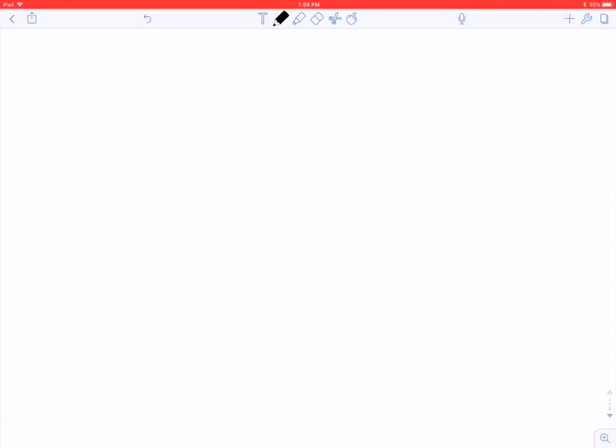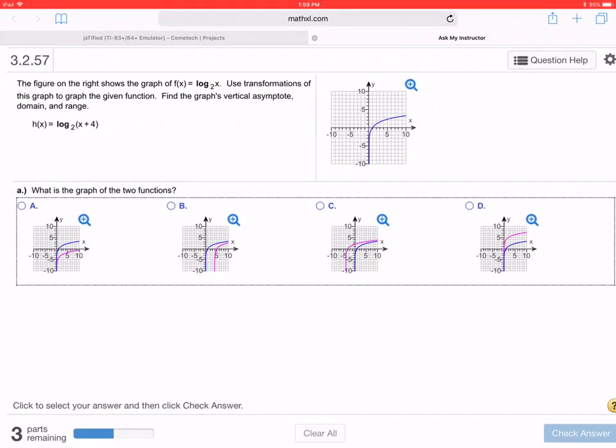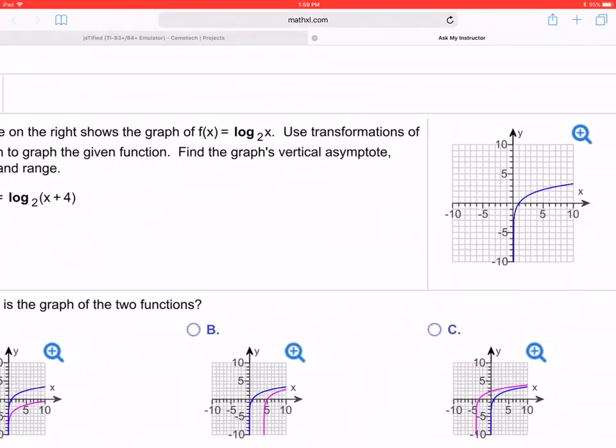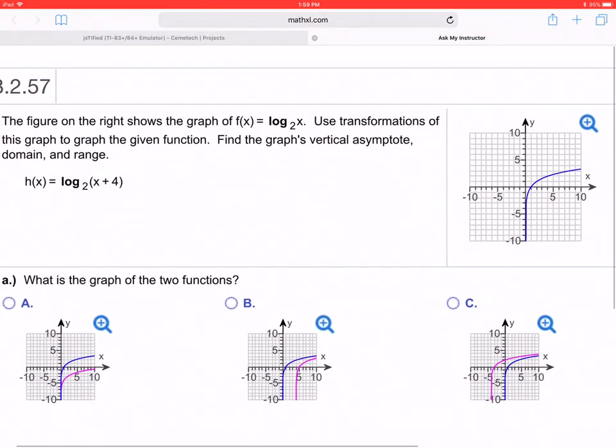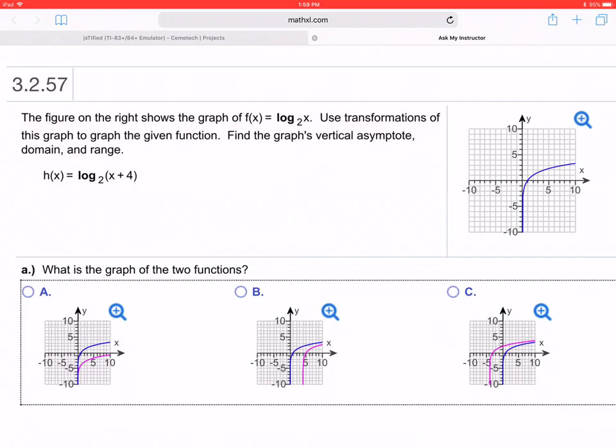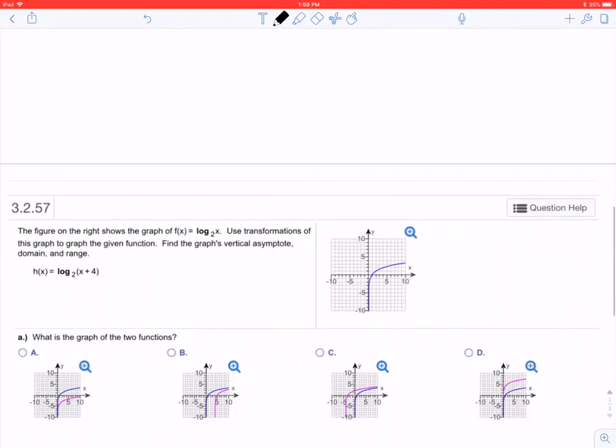Alright, greetings YouTube, this is A Beautiful Mind. So we have a question that comes in on graphing logs. Let's take a look at it. The figure on the right shows the graph of f(x) equals log base 2 of x. It says use transformations of this graph to graph the given function, find the graph's vertical asymptote, domain, and range.